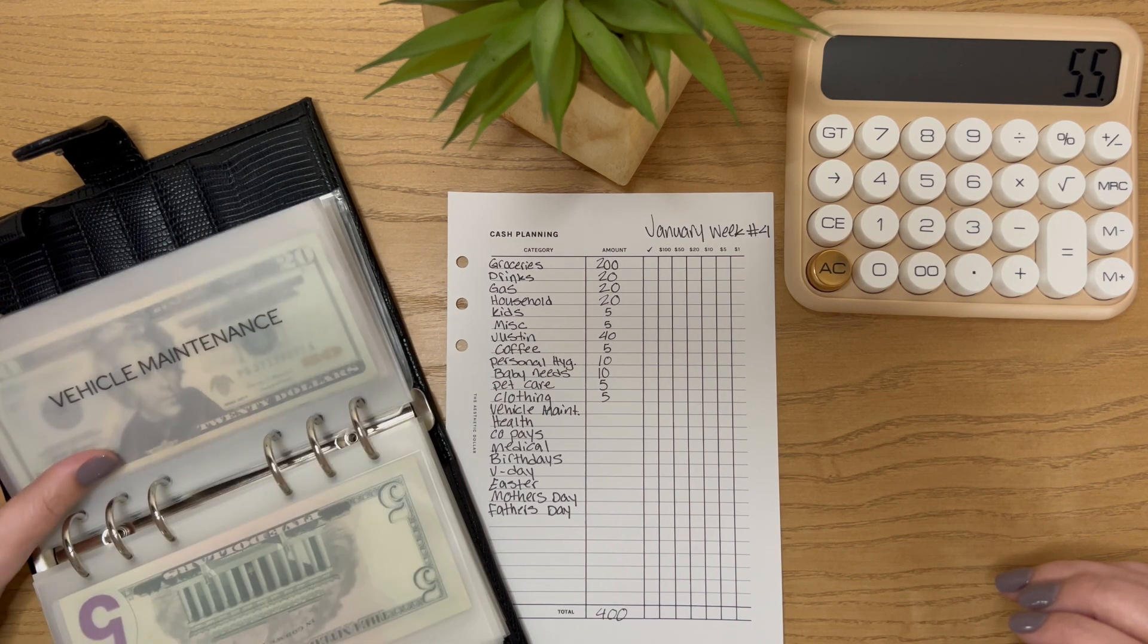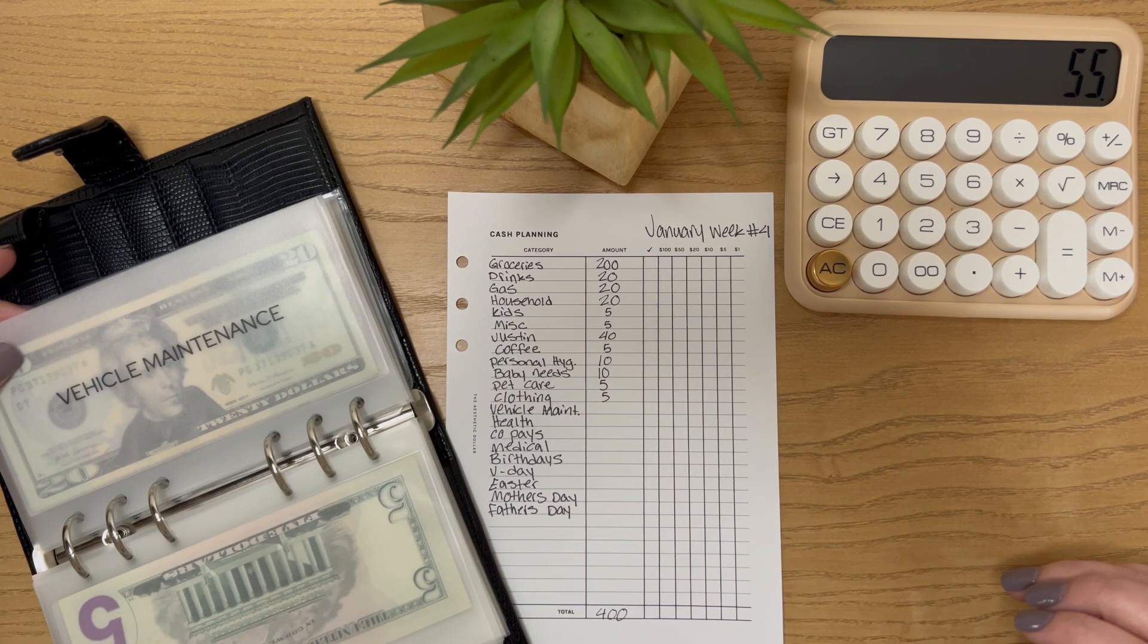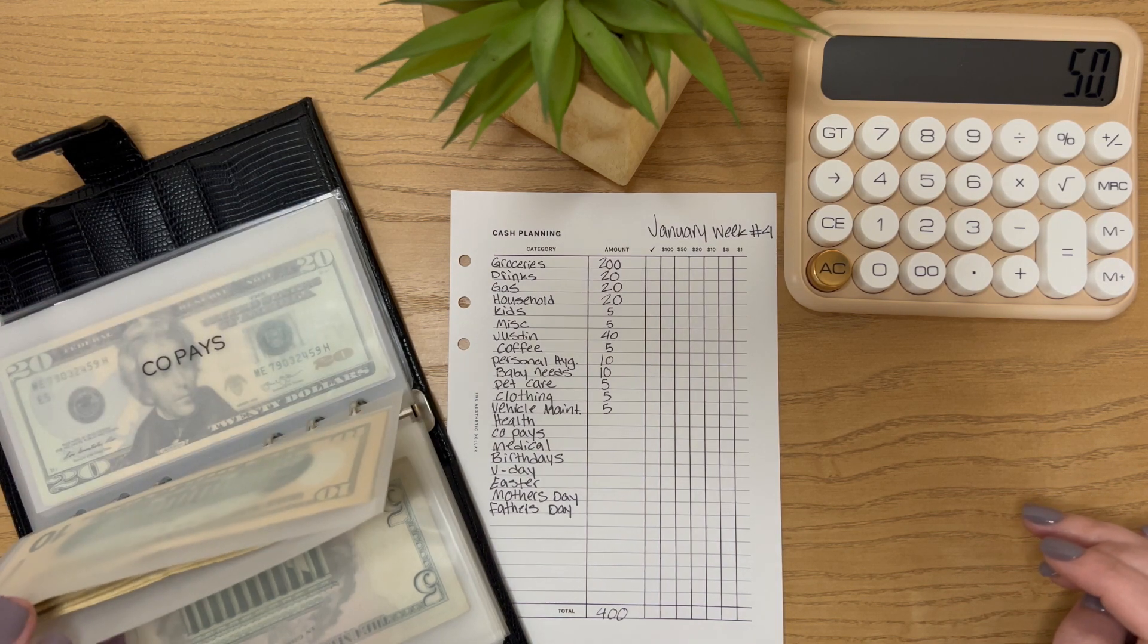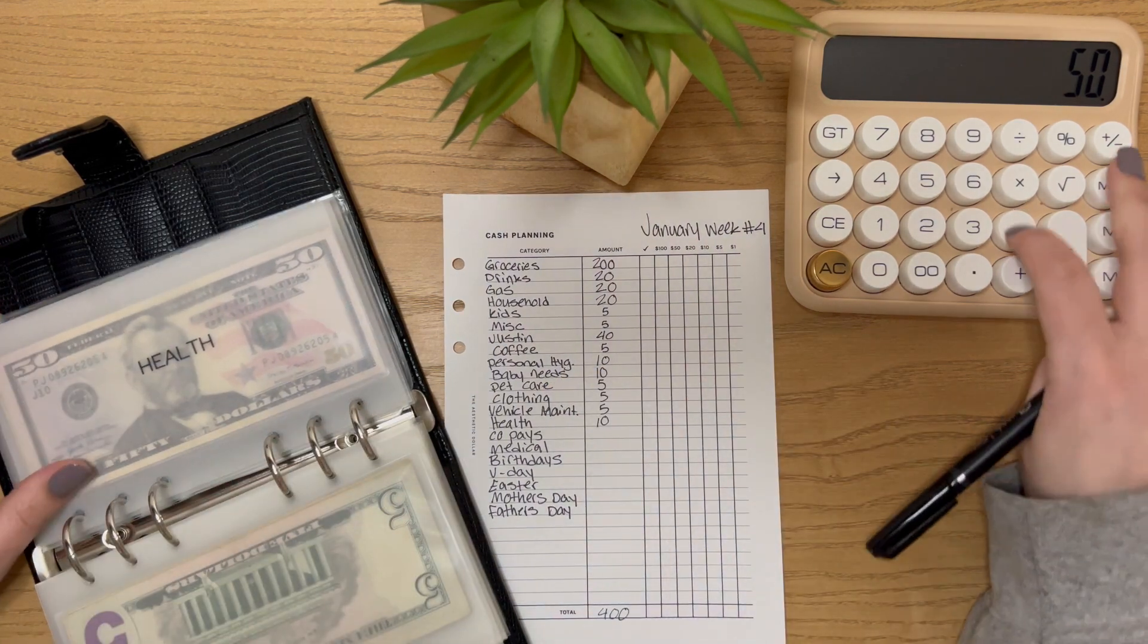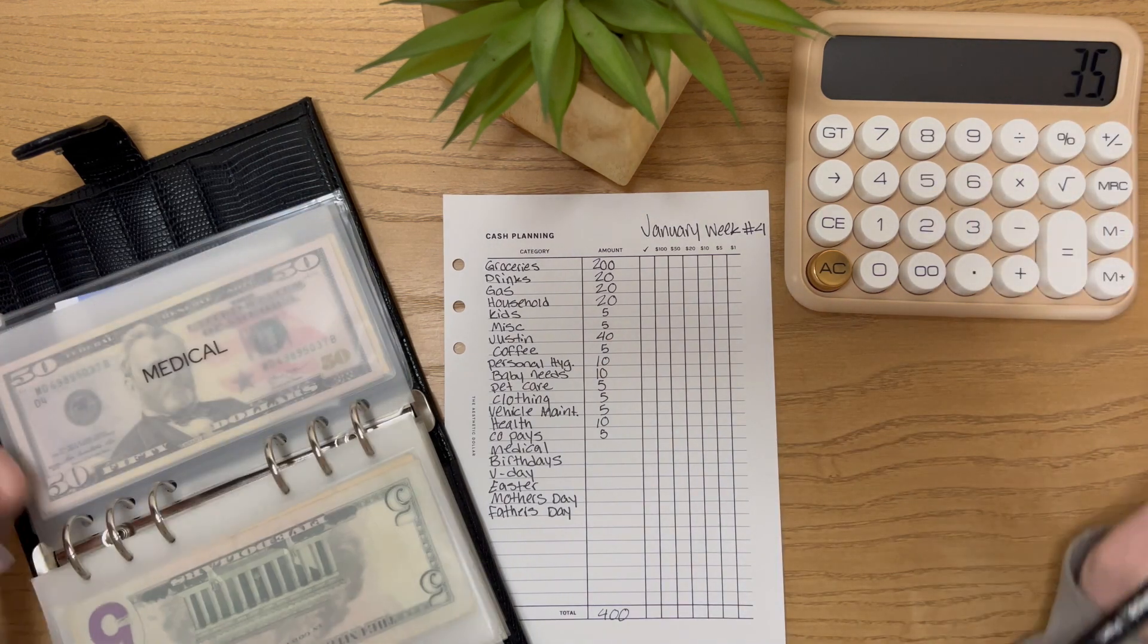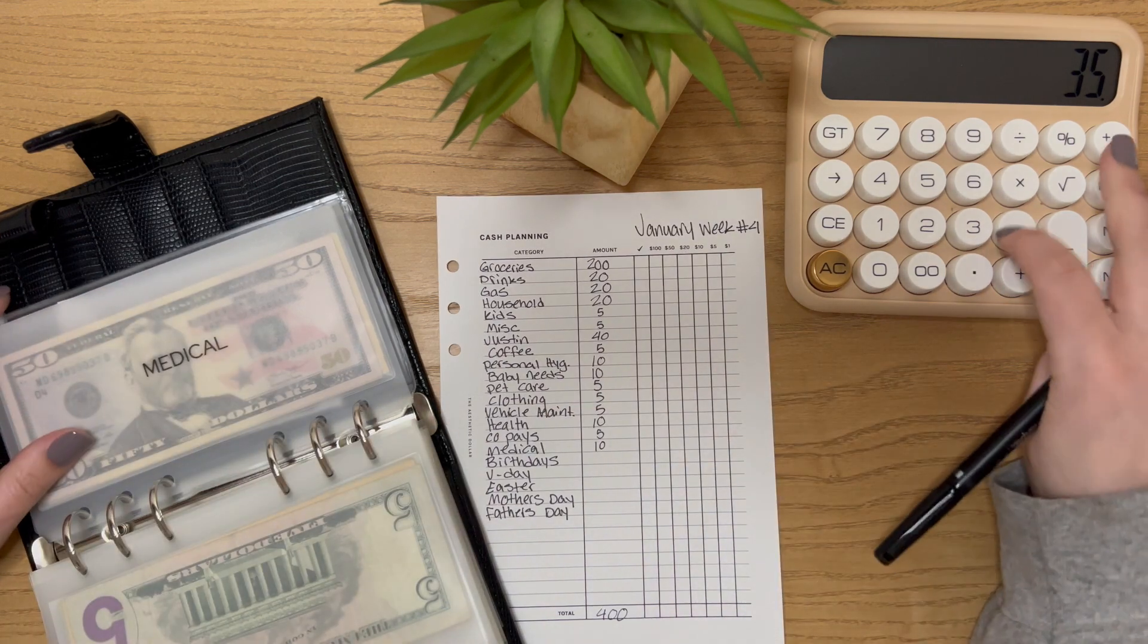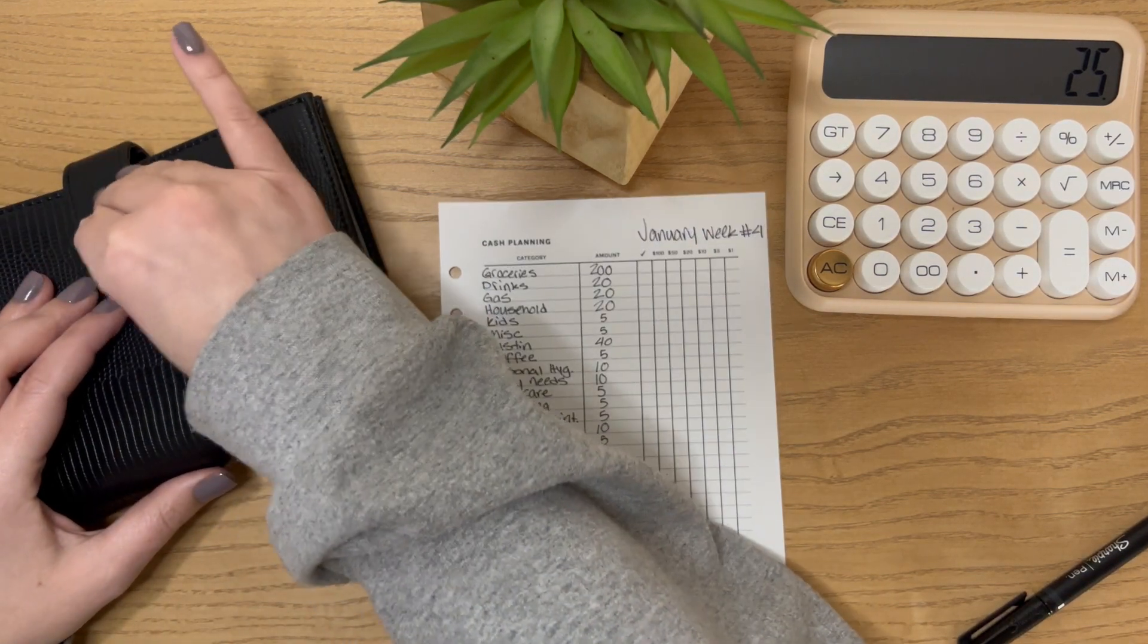I'm not going to stuff electricity. Vehicle maintenance has 105 in here. We'll go ahead and just put five to make it 110. Health, I think it has 130 or 140. I'm just going to do 10 this week for that. Copays, I'm going to do five. $35 left. Medical, I'm going to do 10. I was able to put a good chunk in there last week. So that is it for that one.